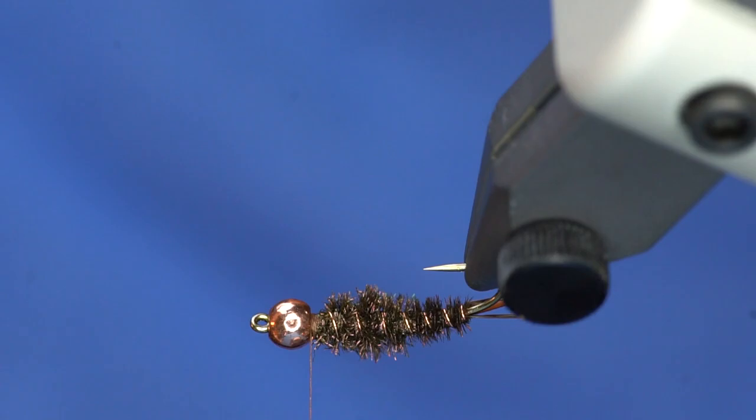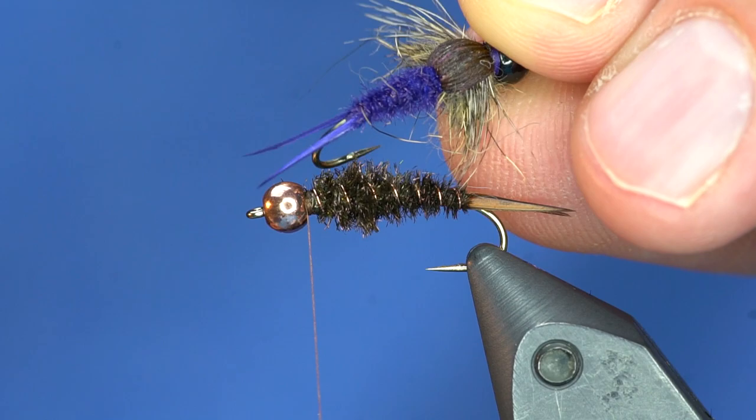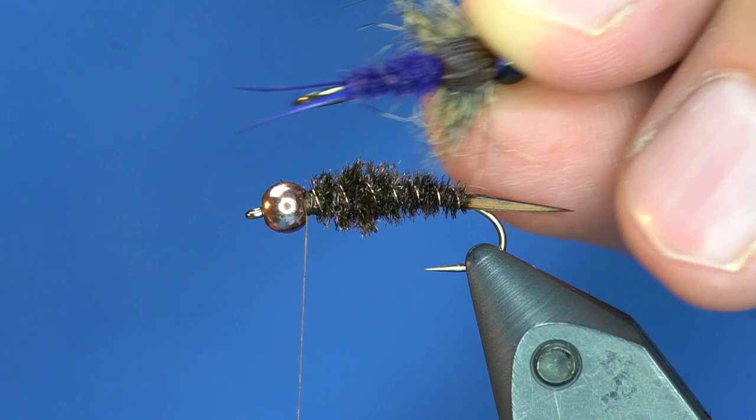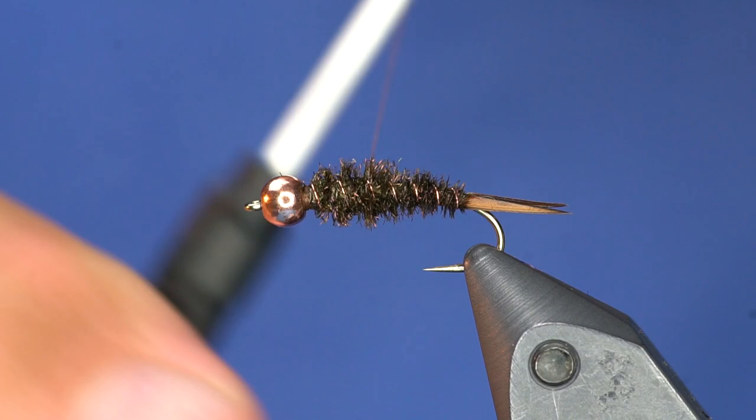I actually did do that with this purple peacock body. And Curtis will take a picture with his nerdy freaking camera. And he will show you what this one looks like close up. Okay. So now to tie in the thorax. I'm going to wrap my thread back and let it hang almost at the halfway point. Maybe a little bit closer to the bead. Right here.